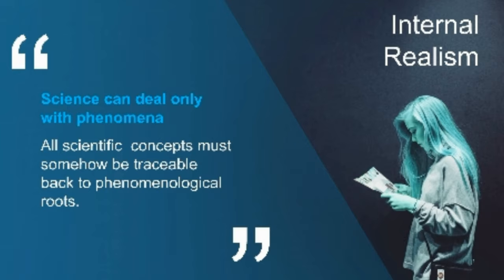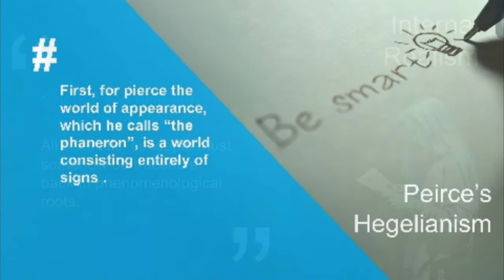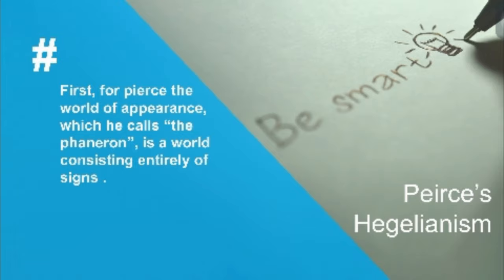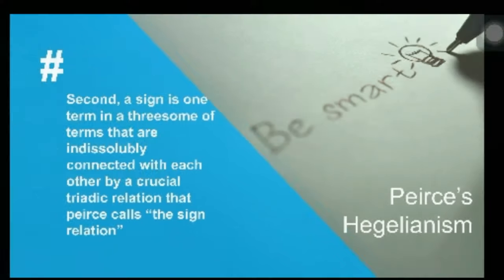Another profound idea of Peirce is his Hegelianism, which is connected to evolutionism — it is in the constant process of change. There are four major components of his Hegelian idealism. First, for Peirce, the world of appearance — which he calls the Phaneron — is a world consisting entirely of signs. These signs are qualities, relations, features, items, events, or everything that has meaning and appearances.